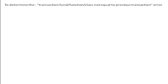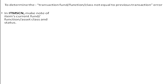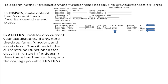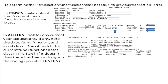To determine the cause of the error, go to the item screen and make note of the item's current asset class, status, function, and fund. Then, in the acquisition transaction, look for any current year acquisitions. If there are any, note the date and the fund, function, and asset class — are any of these different from what is shown on the item screen?